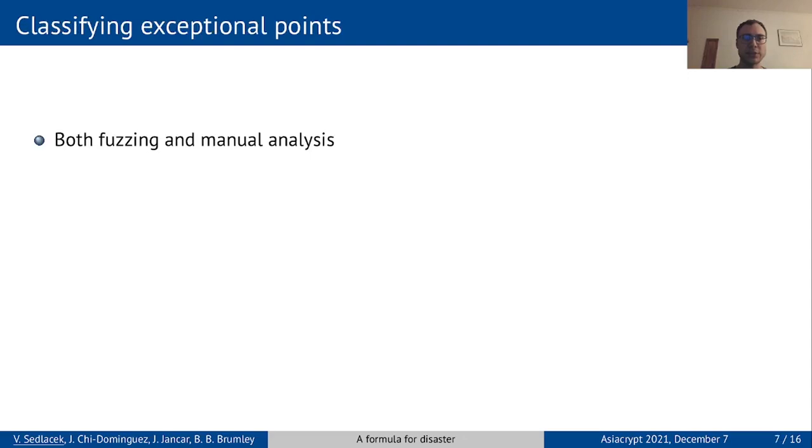To classify the exceptions, we took two different approaches. Fuzzing allowed us to automatically go through all pairs of points on small curves, so that we could try to extrapolate the results. Unfortunately, it had a lot of false positives.